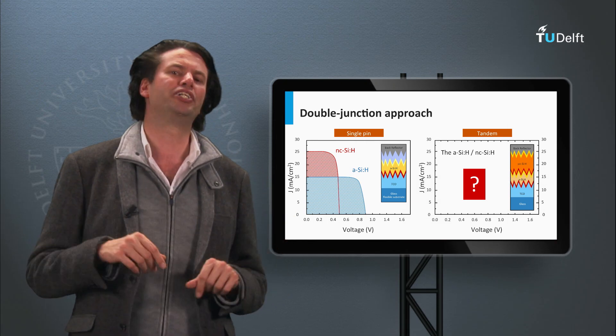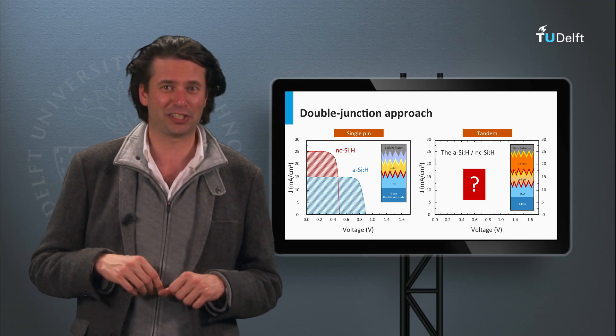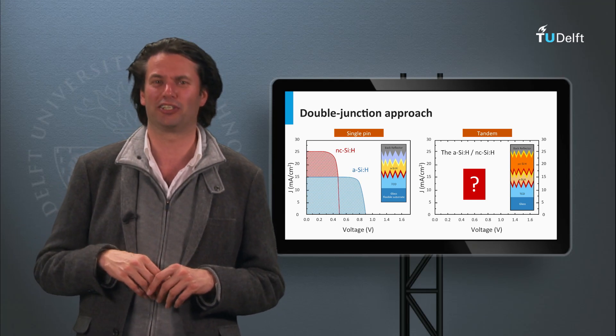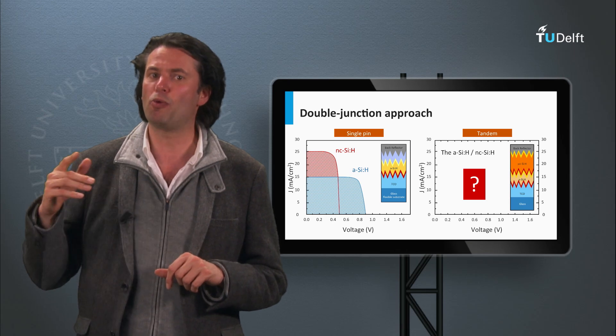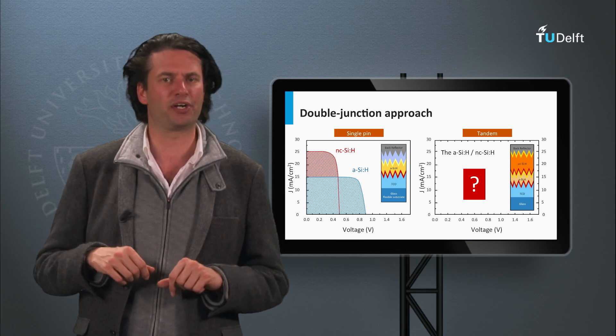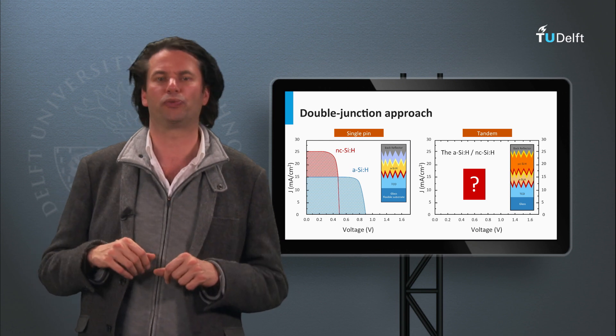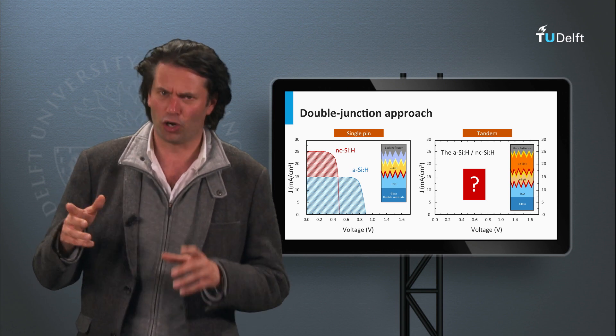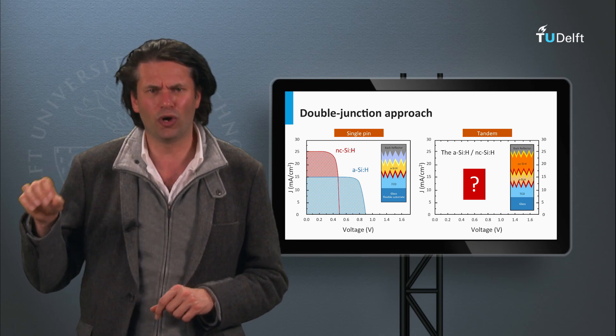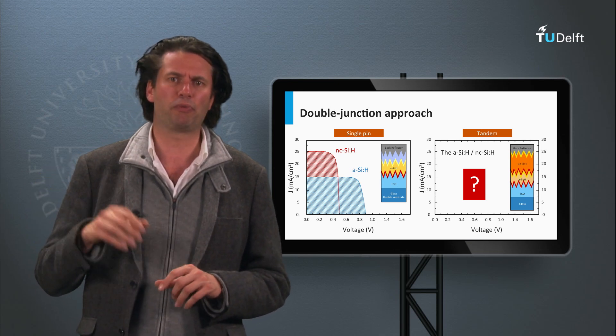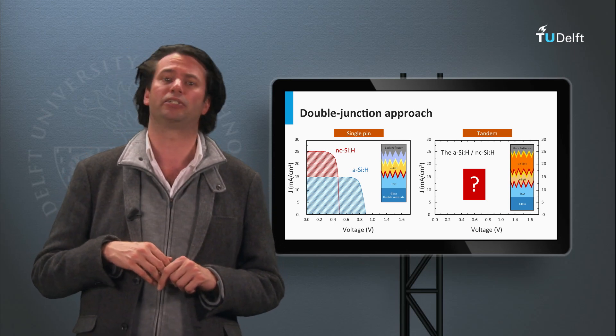Let's look at the JV curves of a single junction amorphous silicon solar cell and that of a single junction nanocrystalline silicon solar cell. The high bandgap amorphous silicon has a high open-circuit voltage of 0.9 volts and a relatively low short-circuit current density of 50 mA per square centimeter. Whereas the low bandgap material of nanocrystalline silicon has a lower open-circuit voltage of 0.5 volts and a higher short-circuit current density of 25 mA per square centimeter.